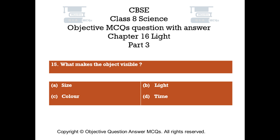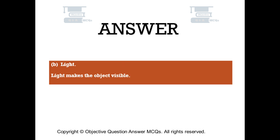Question number 15: What makes the object visible? Option A: Size, Option B: Light, Option C: Color, Option D: Time. The right answer is Option B: Light. Light makes the object visible.